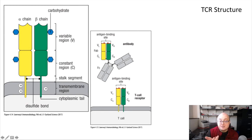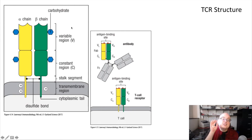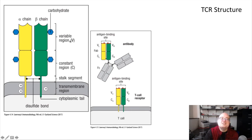The T-cell receptor has short cytoplasmic tails which interact with cytoplasmic proteins, allowing it to transduce a signal. Similar to cytokine receptors, T-cell receptors by themselves are not able to transmit signals—they need to recruit a bunch of different molecules inside the cell to accomplish their biological function. The structure of the T-cell receptor looks like the Fab fragment of an immunoglobulin molecule: alpha and beta chains, which both have variable and constant regions.